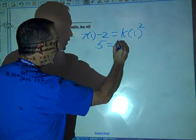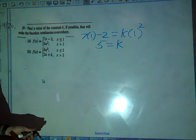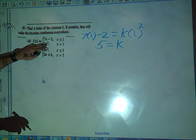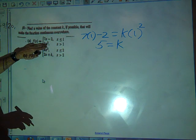And once it's k times 1 squared, so it's k squared? So it'll be just k. It'll be just k, right? Because 1 squared is 1. We cannot put k squared. Very, very good.